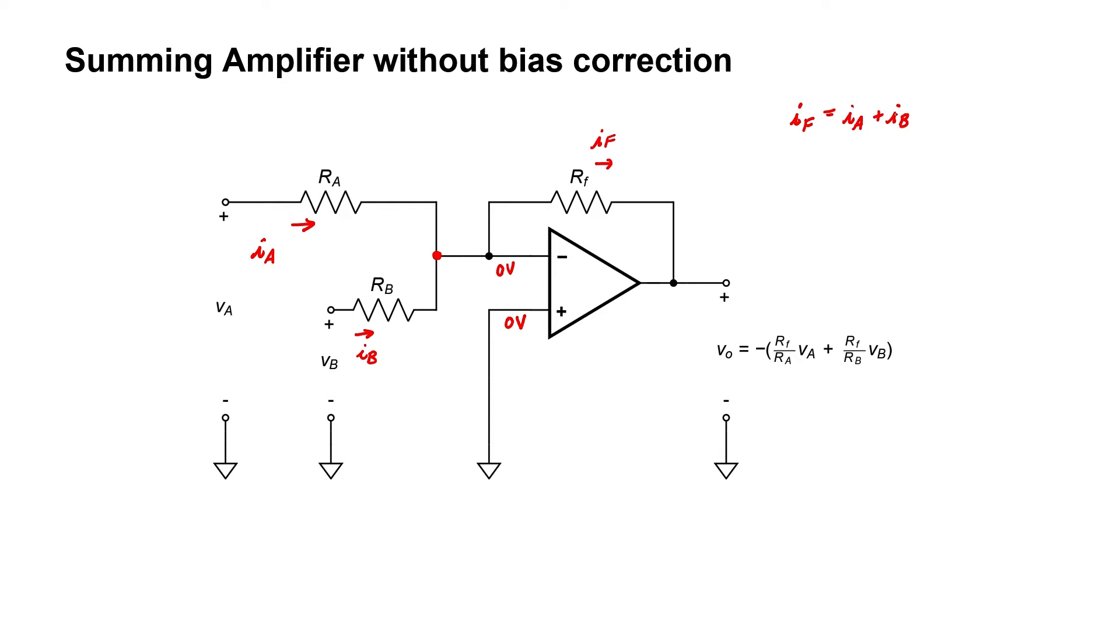We can use Ohm's law to find all of these currents. I sub F is minus V out over R sub F. I sub A is VA over RA, and I sub B is VB over R sub B. Multiplying everything times minus RF immediately allows us to solve for the output voltage in terms of the inputs.